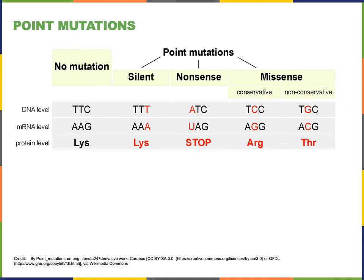A silent mutation is a mutation that does not affect the sequence of amino acids in the resulting protein, and therefore won't affect the function of the protein. A silent mutation is still a change in the nucleotide sequence of a gene, but it has no real consequence to the protein.